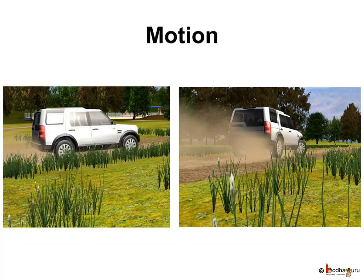An object is in motion if its position changes with time in relation to a stationary object, such as a tree, or a house, or a platform. So when we say an object is moving, it is always with respect to another object which is not moving — that is, it is stationary.